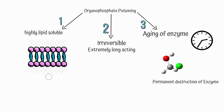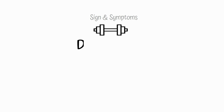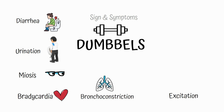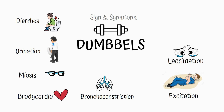Signs and symptoms of organophosphate poisoning are represented by the mnemonic DUMBBELLS: Diarrhea, Urination, Miosis, Bradycardia, Bronchoconstriction, Excitation of the CNS (which can present as seizures or fasciculations and spasms), Lacrimation, and Sweating and Salivation.